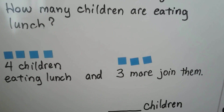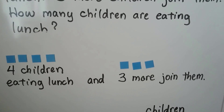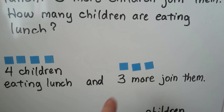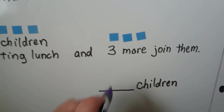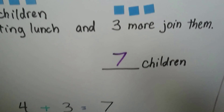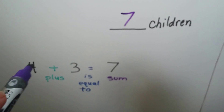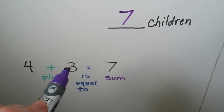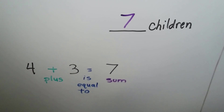How many children are eating lunch? We count them all: one, two, three, four, five, six, seven children. Four children plus three children is equal to seven children.